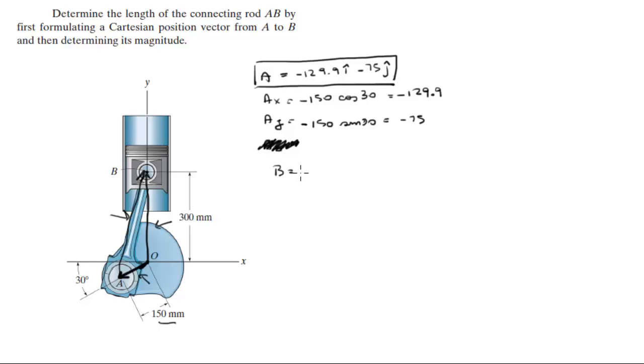Vector B, very easy. The vector B has an X component and a Y component. The X component is zero, it's not going anywhere. It's just going straight up. The Y component is 300. So, we'll make this zero I plus 300 J.